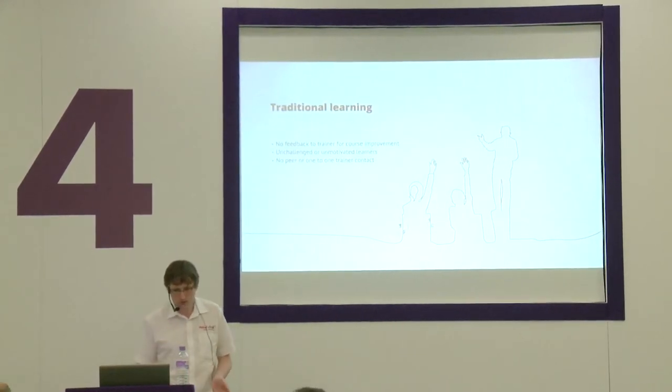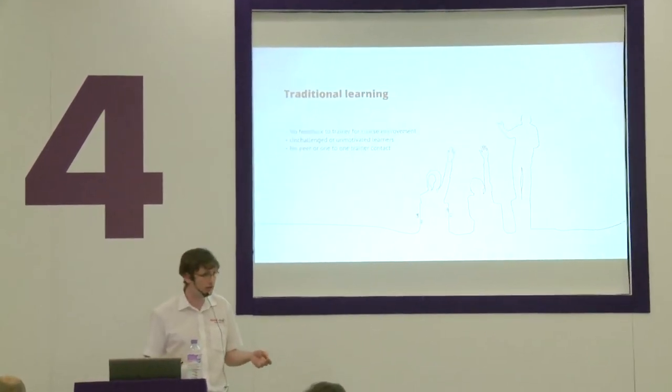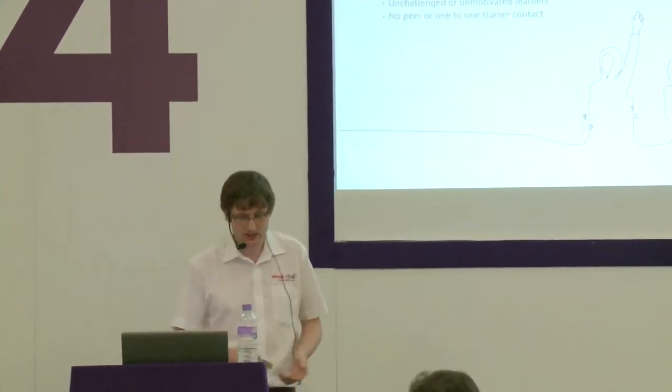That led me to look at traditional learning with quite a negative outlook. I had no feedback to the trainer, I was unchallenged, I was unmotivated. I did two years of this and at the end of it I got an E. There was no peer or one-to-one feedback. So it got me thinking: how can we look at solving the issues of traditional learning?